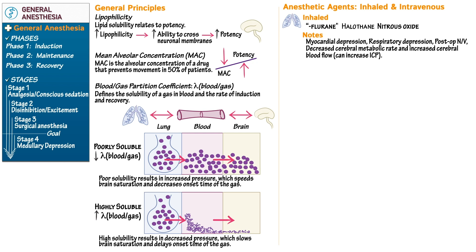For halothane, think of hepatotoxicity. This is rare and is thought to occur through a reactive metabolite that produces either direct toxicity or indirect immune-mediated responses. Also note catecholamine sensitivity — in the setting of catecholamines, halothane and isoflurane are known to cause cardiac arrhythmia.